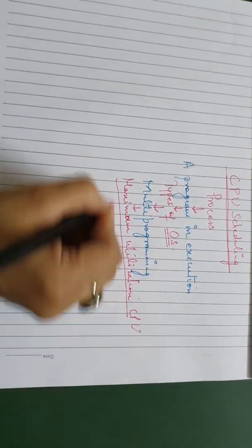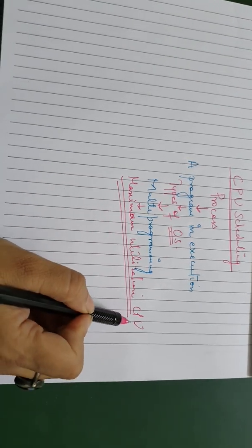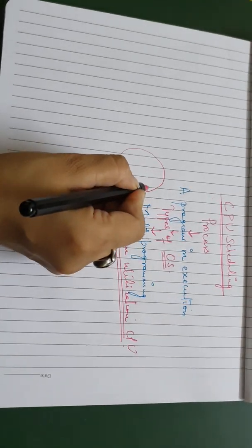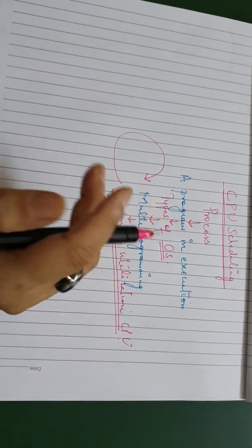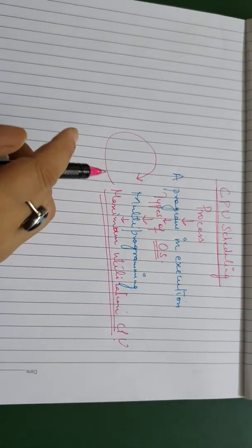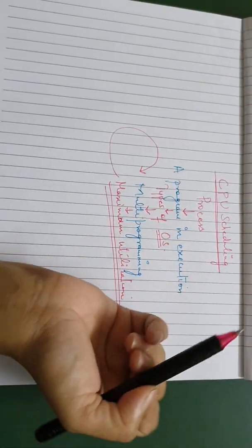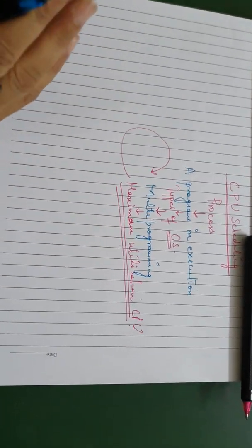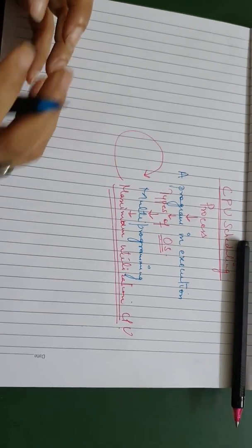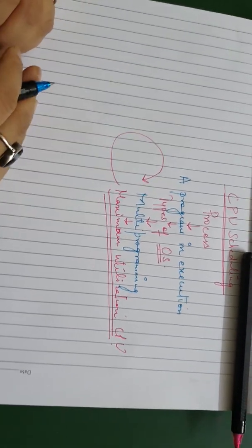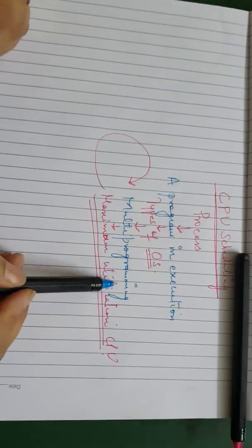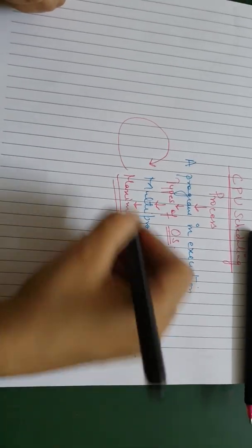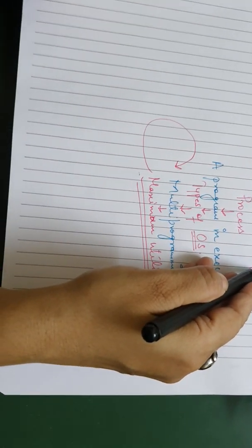Our target is to have the maximum utilization of the CPU. In a multi-programming environment, we need scheduling of the processor. Why do we need this scheduling? Because n number of users are performing multiple tasks in a multi-programming environment, and we need to achieve maximum utilization of the CPU. That is why we need to schedule the CPU.